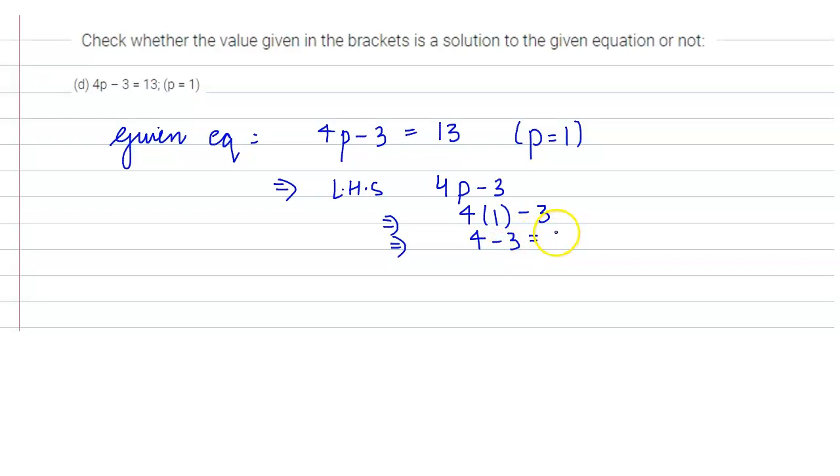Now you can clearly see that 1 is not equal to 13. Therefore, left-hand side and right-hand side are not equal. That means p equals 1 is not the solution of the given equation, which is 4p minus 3 equals 13.